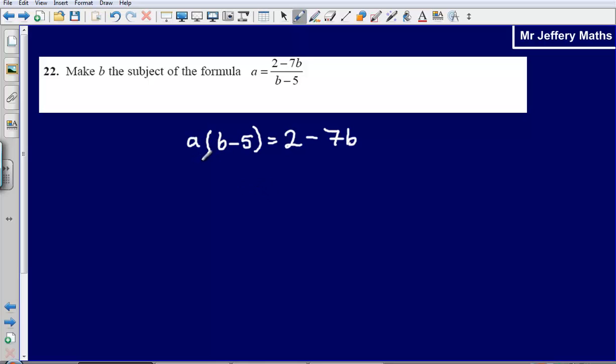Now next I need to multiply out my brackets. So that gives me a multiplied by b is ab, a multiplied by negative 5 is going to give me minus 5a and then that is equal to 2 minus 7b.